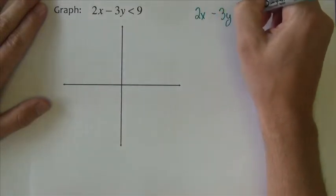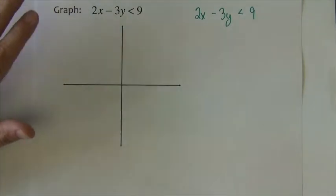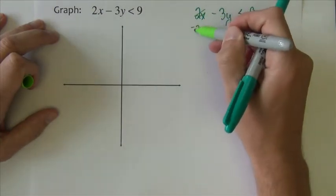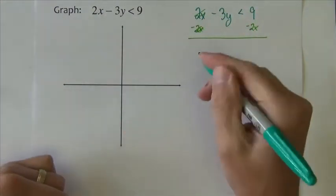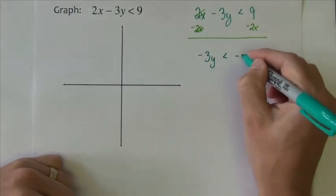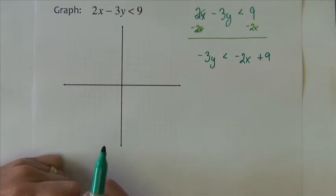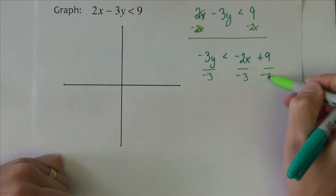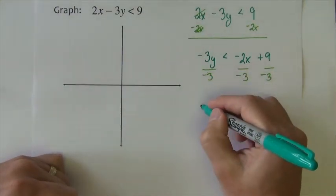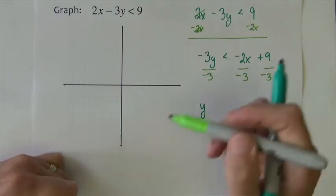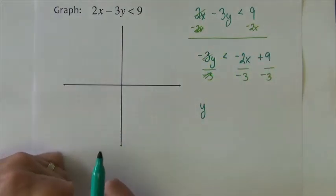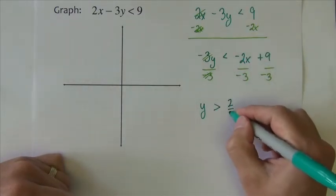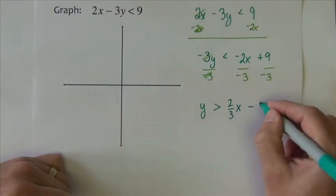2x minus 3y is less than 9. First we're going to subtract 2x from both sides, so we have negative 3y is less than negative 2x plus 9. We're going to divide by negative 3, so we get y. Because we have divided by a negative number, recall that means the inequality will flip directions. The two negatives here make positive 2/3 x, and this is going to reduce to minus 3.